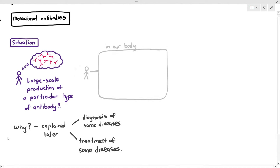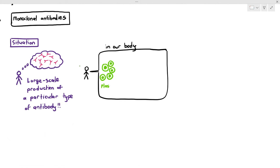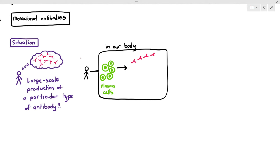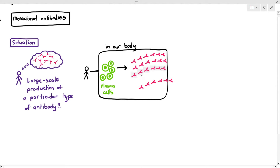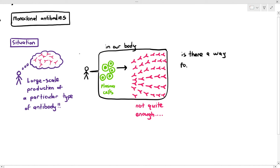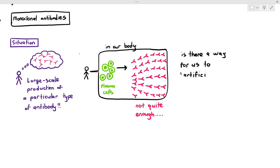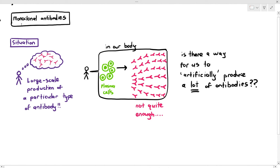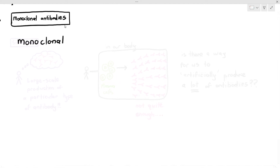In our body, under normal circumstances, it is the plasma cells that produce antibodies. While the plasma cells can produce a lot of antibodies, it's not enough — we would like to have more. So the question is: is there a way for us to artificially produce a lot of antibodies without relying on our body itself? And the answer is yes.